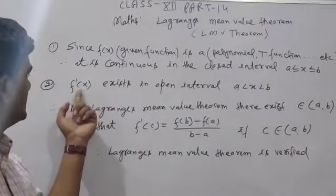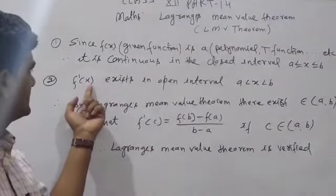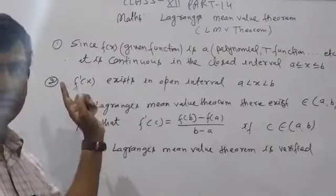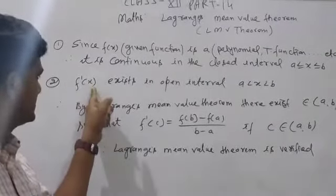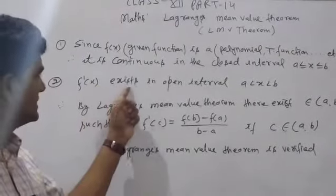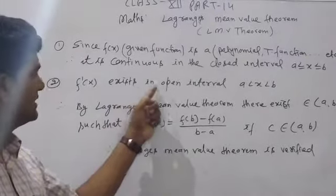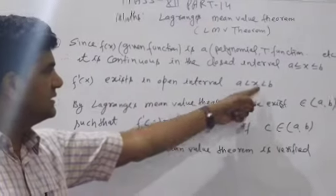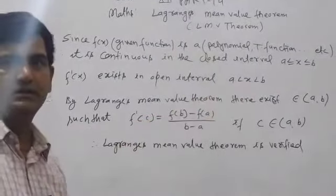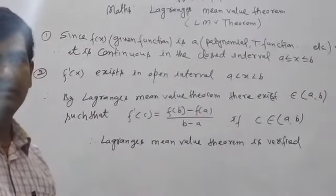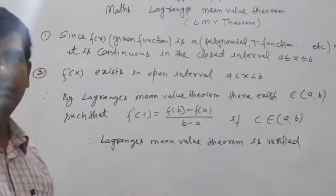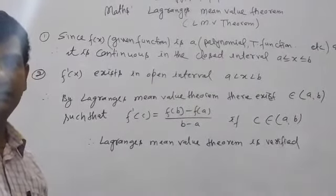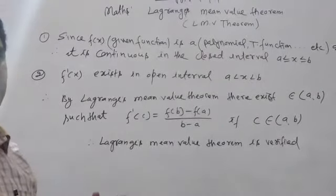The second condition is: f'(x) — the derivative of f(x) — exists in the open interval a < x < b. This is the second point. In Rolle's Theorem there is one more point, but here there are only two points.